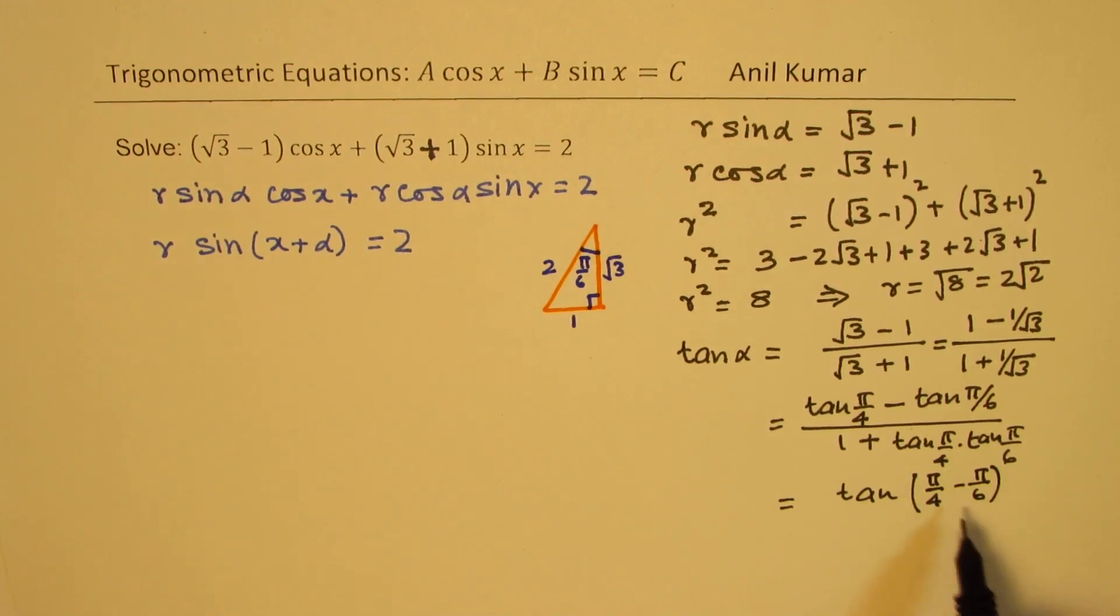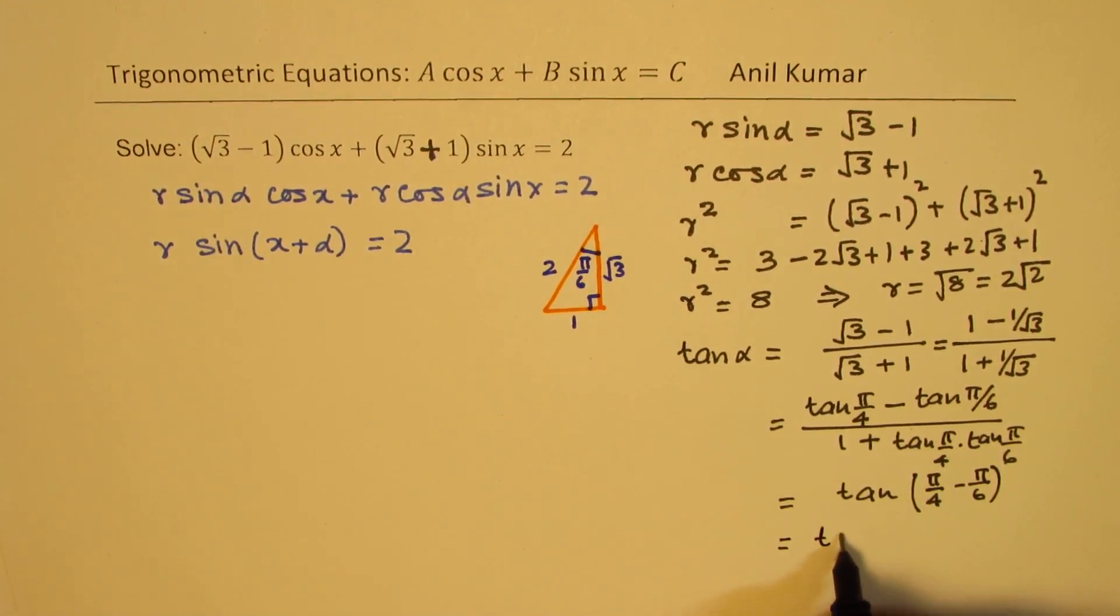Pi by 4 minus pi by 6 is, let's complete this: taking 12 as your common denominator, 3 pi minus 2 pi, so we get pi over 12.